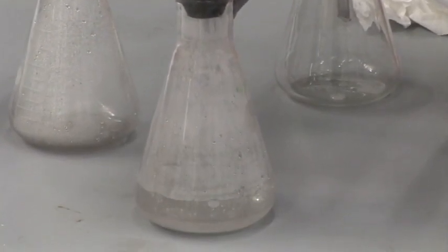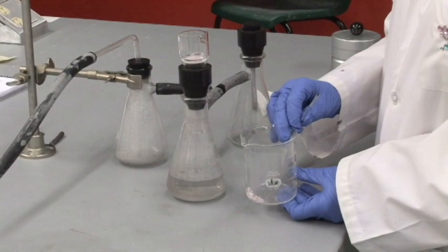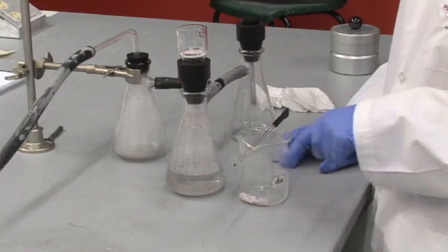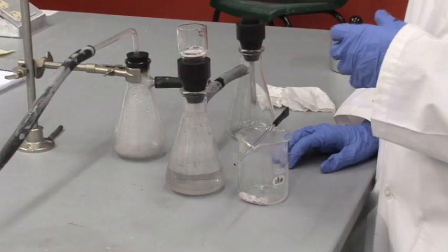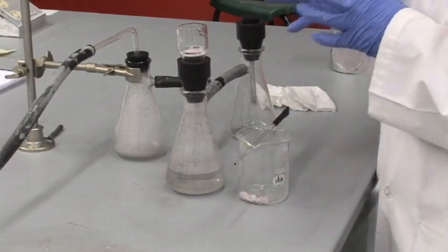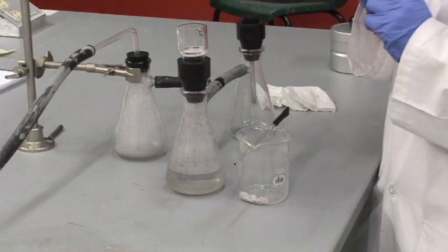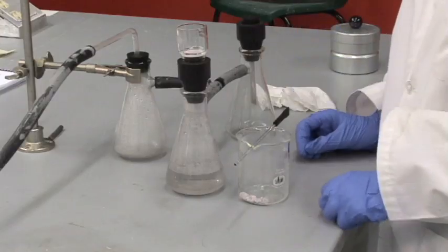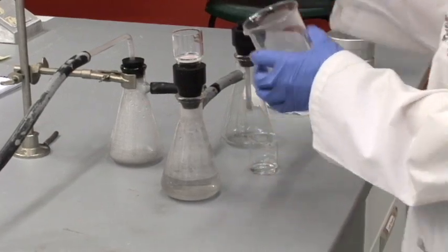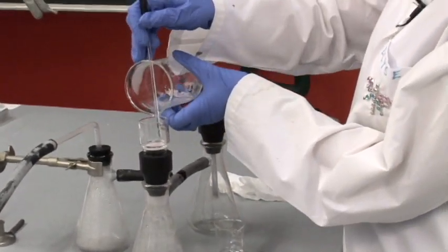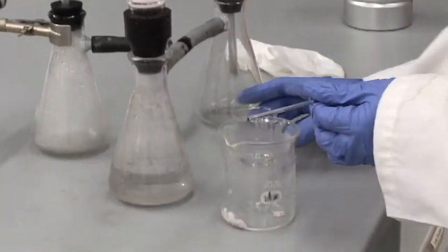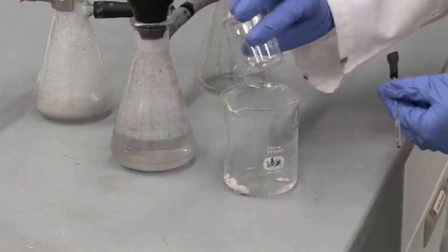So some of the precipitate did go onto the filter but most of it is still in the beaker. The next thing that you'll be doing is rinsing the precipitate with some dilute nitric acid to ensure that the coagulated or the larger pieces of the salt do not break back up into the colloid, so the very small particles. So you'll be adding just a few mils of nitric acid to the precipitate in the beaker to wash it. You will decant through the filter one more time.